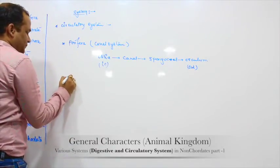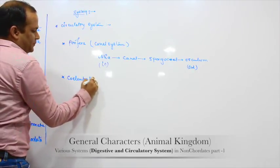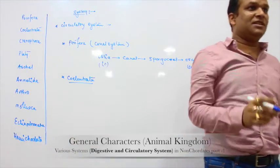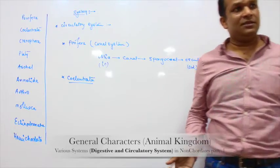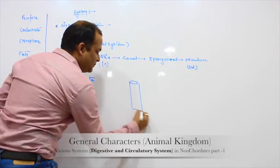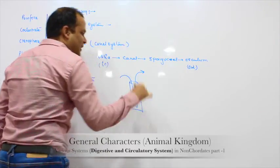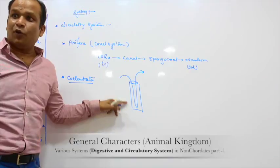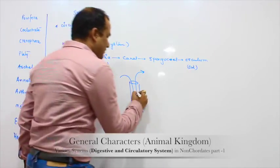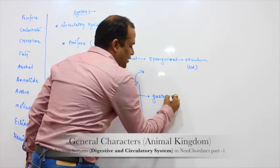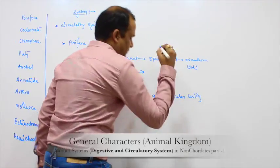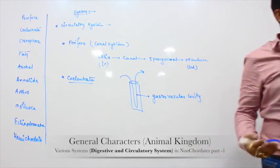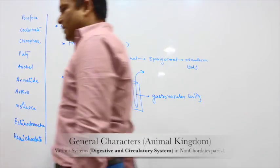In Porifera that's the first one. The second one is Coelentrata. In Coelentrata, it is blind — there is only a single opening. There is no anus. The gastrovascular cavity acts as the circulatory system — this cavity is known as the gastrovascular cavity. The inlet and outlet is the mouth. This is the case of Hydra.